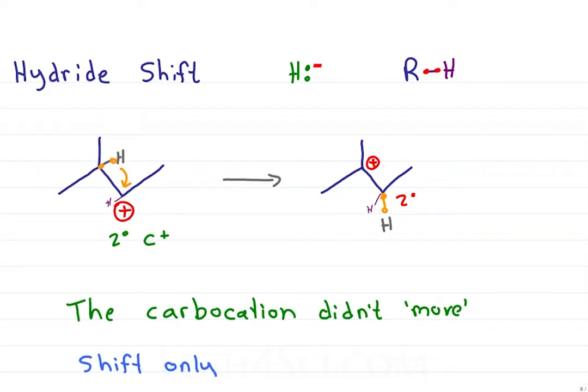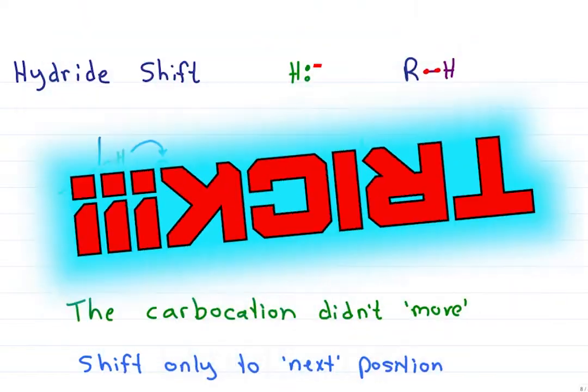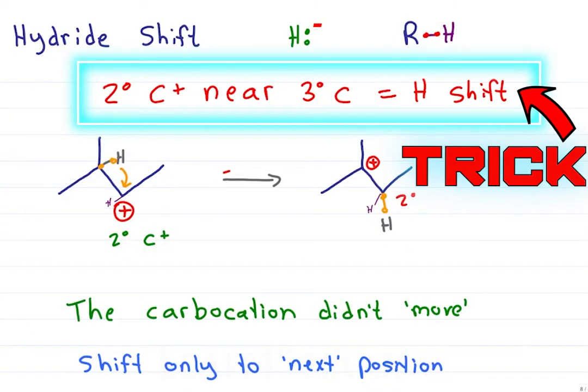The second thing to keep in mind is you can only shift to the next position. Since this carbon is directly attached to the carbocation, I'm allowed to move the hydrogen one space over. But if I had a carbocation here, I'm not allowed to move the hydrogen because that's more than one position. Now that you get the basics, here's the trick to recognize. A secondary carbocation near a tertiary carbon will give you a hydride shift.